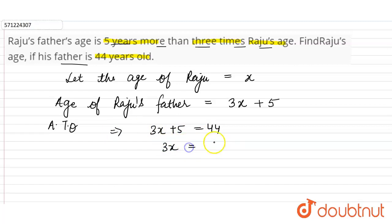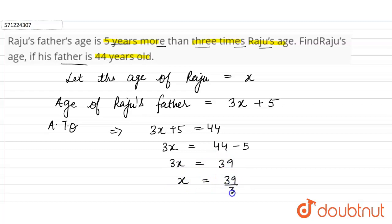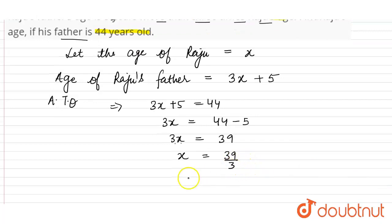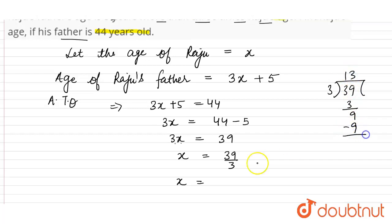Three x will be equal to 44 minus 5, because transferring the positive five to the right-hand side makes it negative five. So three x equals 39. Therefore, x equals 39 divided by 3, since 3 is in multiplication. 39 divided by 3 equals 13.